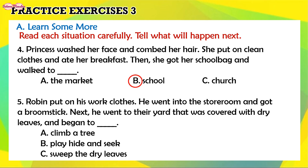5. Robin put on his work clothes. He went into the storeroom and got a broomstick. Next, he went to their yard that was covered with dry leaves, and began to... A. Climb a tree. B. Play hide and seek. C. Sweep the dry leaves. The answer is C. Sweep the dry leaves.